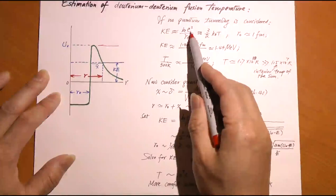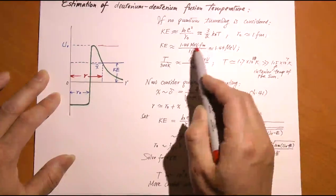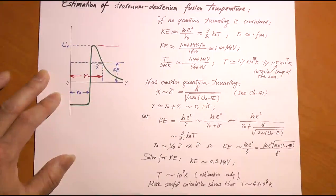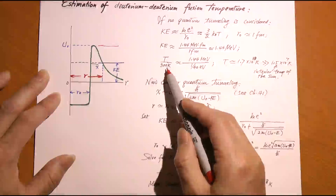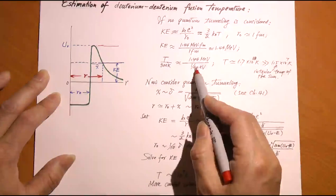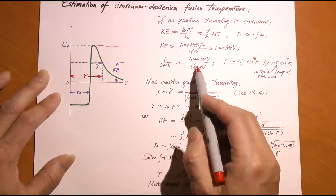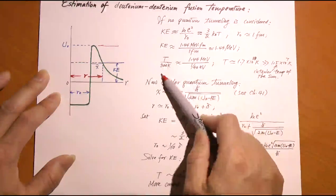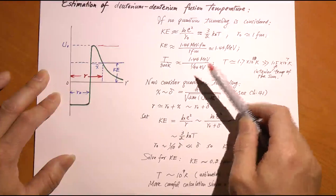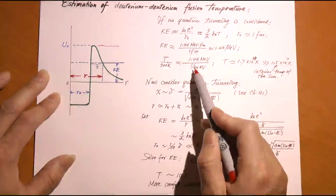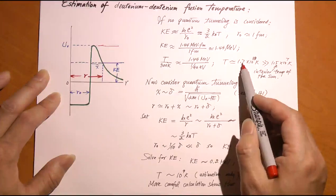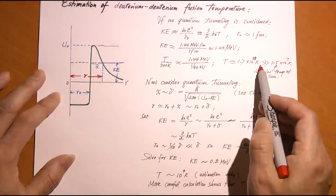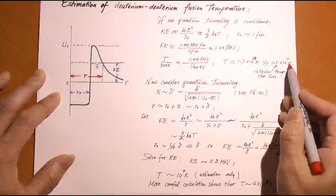At room temperature (300 K), the average particle energy is about 1/40 eV. Now we need 1.44 million eV, so the required temperature scales proportionally: the ratio T gives approximately 1.7 × 10^10 kelvin—17 billion kelvin—instead of the 15 million kelvin at the center of the Sun. This suggests fusion should not be occurring in the Sun, since the temperature is about three orders of magnitude lower than this estimate. However, this is an overestimation for two reasons.